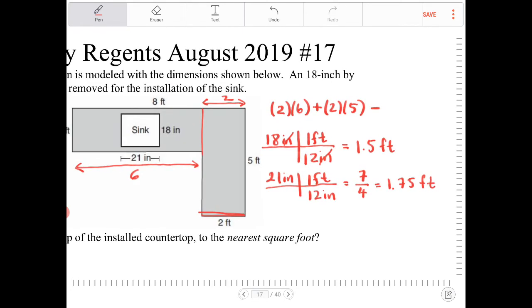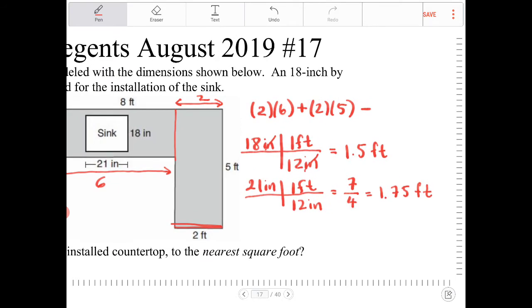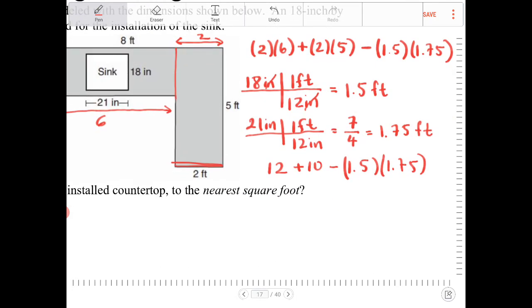So what I'm going to do with the area that I found earlier, I'm going to subtract it by the product of 1.5 and 1.75. And now I'm going to enter all that into the calculator. So this is 12 plus 10 minus 1.5 times 1.75. So it's really 22 minus that product. So I'm going to enter that into the calculator.